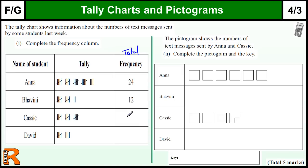We've got 5, 10, 15 for Cassie and 5 plus 4 which is 9 for David. There's one mark for each of those.